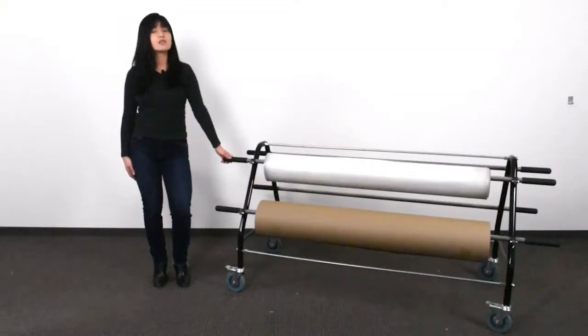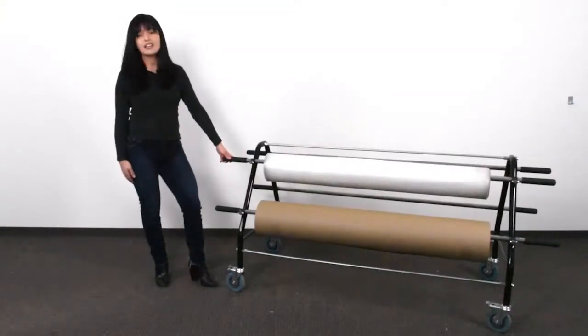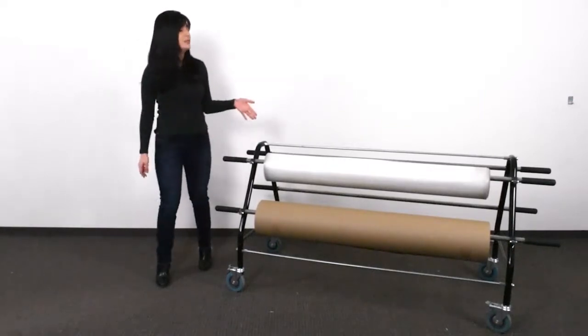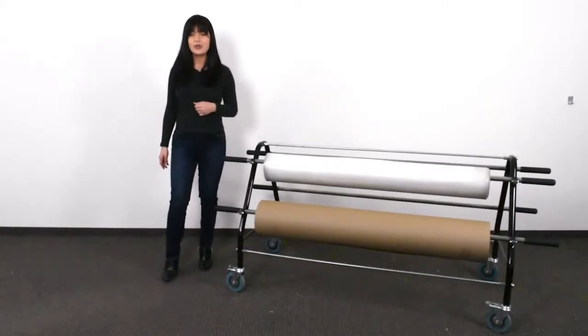Lastly, the roll stand has four 5-inch lockable casters to keep the stand from sliding when in use. The EP6500 is made here in the U.S.A.